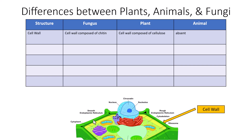The first difference is the cell wall — whether it is present or not. In fungi there is a cell wall present, just like in plants, whereas in animals there is not. Animals like mammals, humans, birds, reptiles, and amphibians do not have a cell wall. Fungal cell walls are composed of chitin, and plant cell walls are composed of cellulose.